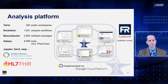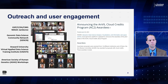This image shows a subset of the major tool environments available on ANVIL. You can see Terra, Dockstore, Bioconductor, Galaxy, Jupyter, and Gen3, with APIs, and the Global Alliance for Genomics and Health, and the Fast Health Interoperability Resources — all within a FedRAMP-certified environment. This gives tremendous capabilities to ANVIL, but you can also imagine it being overwhelming for users. And that's where outreach and user engagement takes center stage.